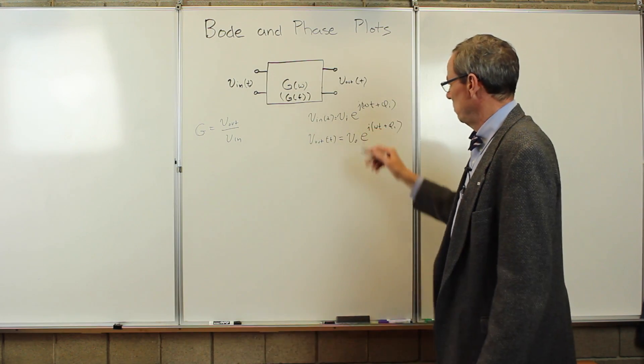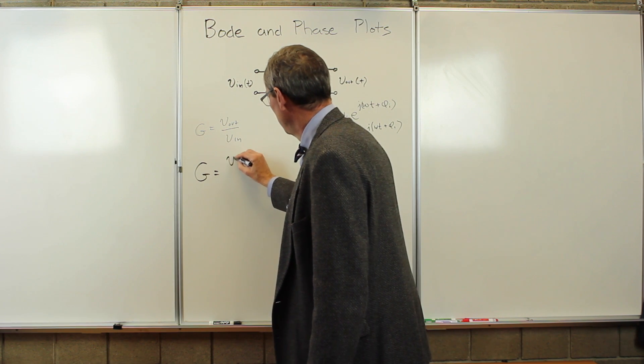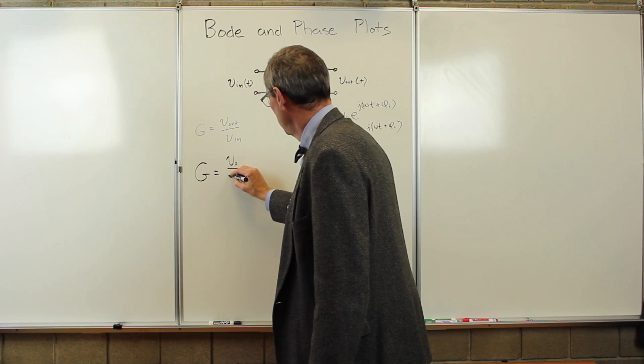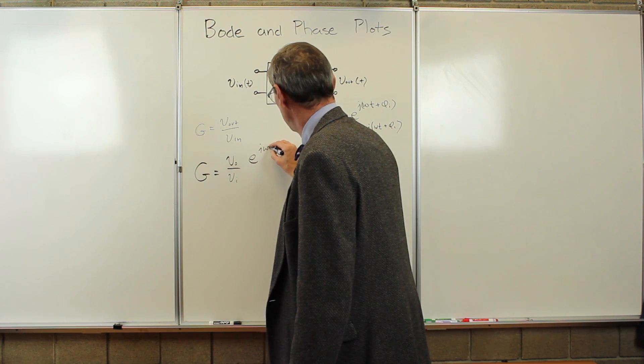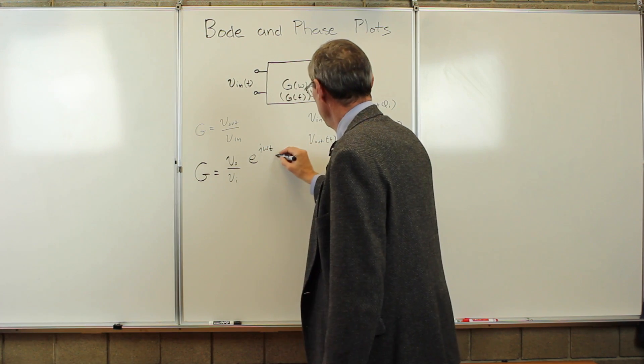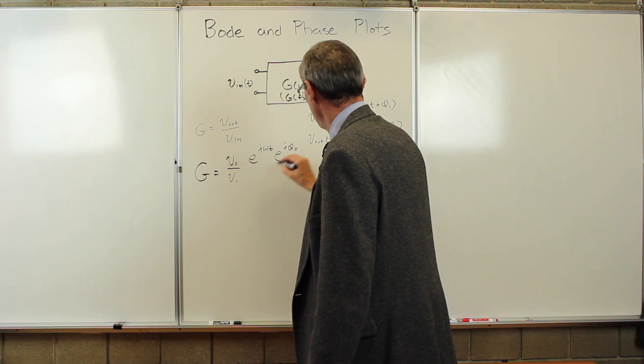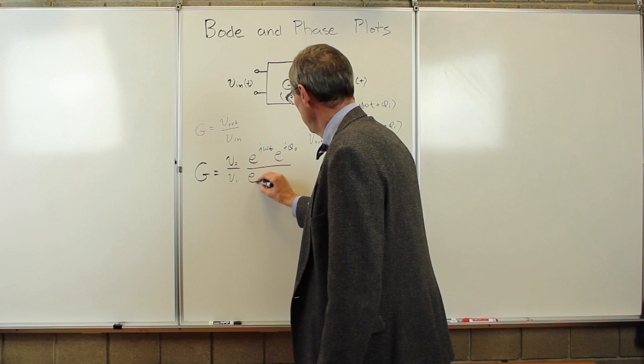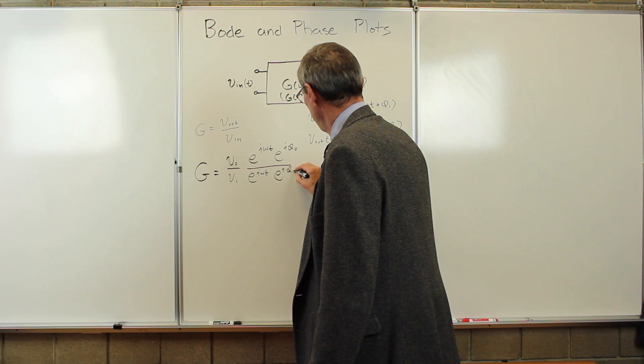And so with this, we can put this into the gain here. The gain is going to be V_o over V_i e to the j omega t, and I'm going to break this up, e to the j phi_o over e to the j omega t, e to the j phi_i.